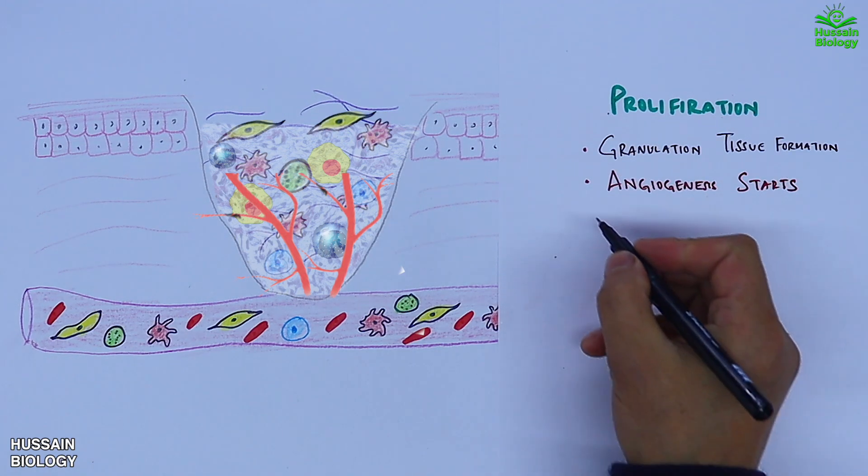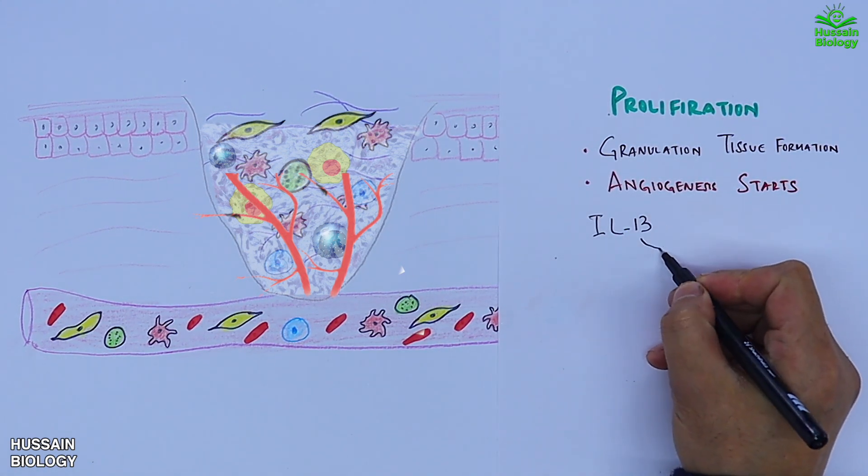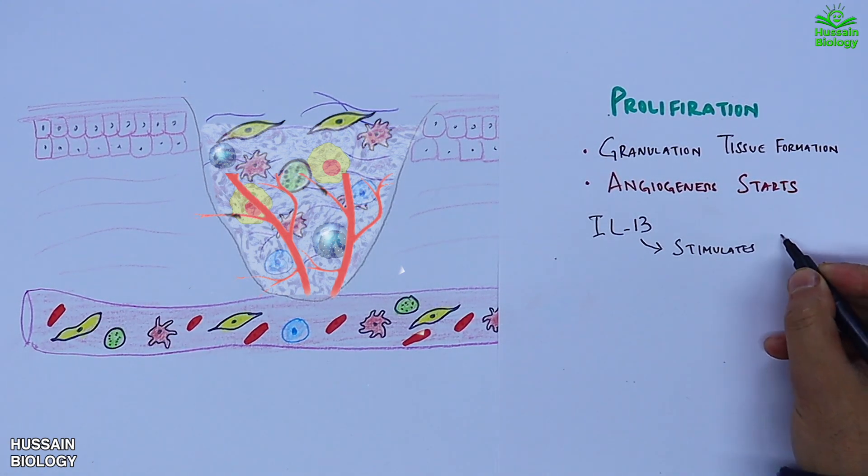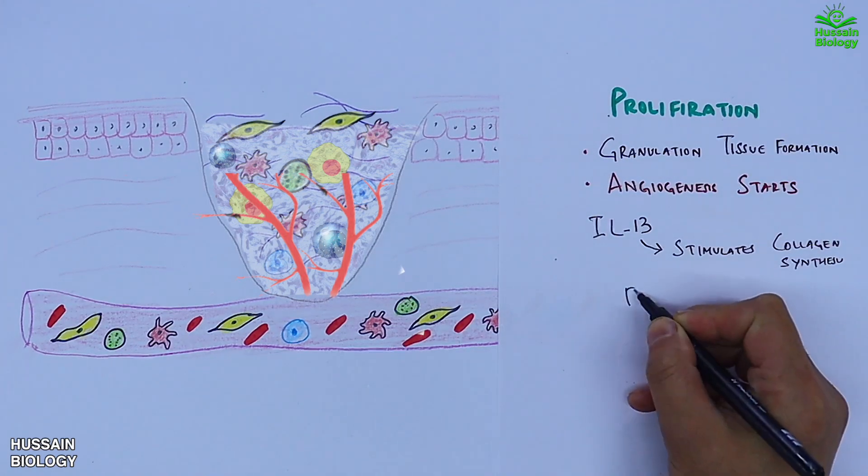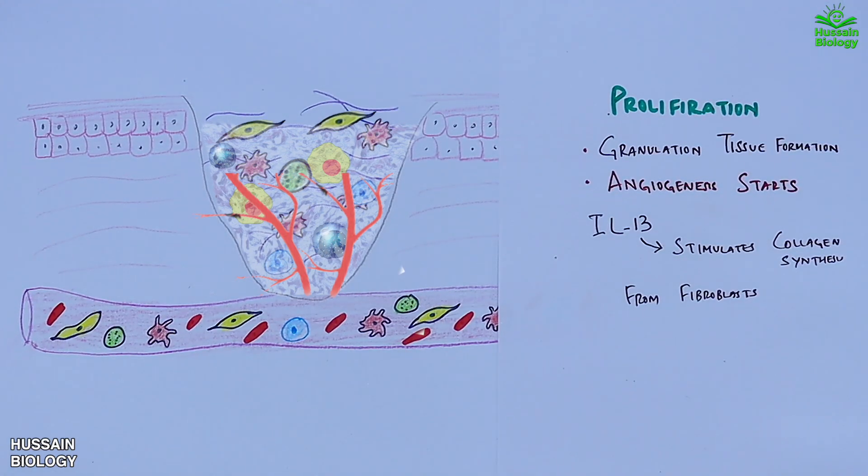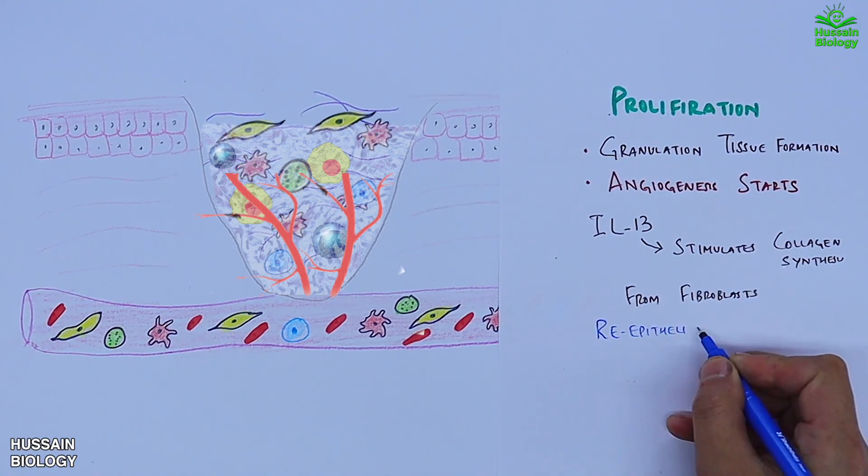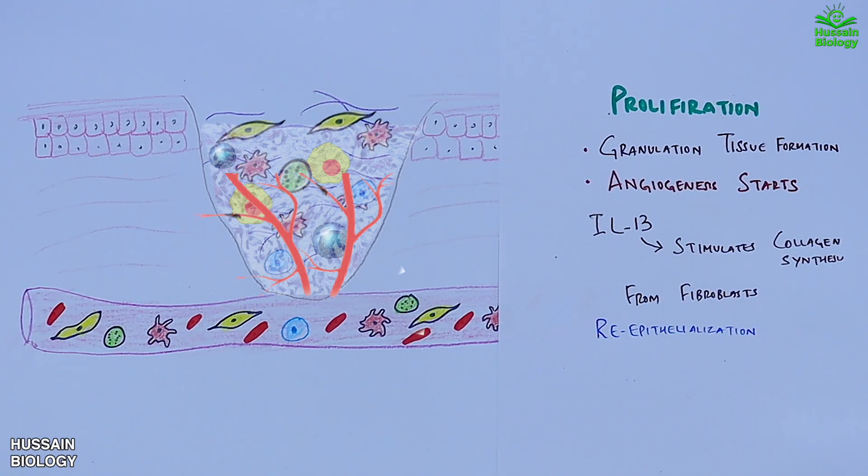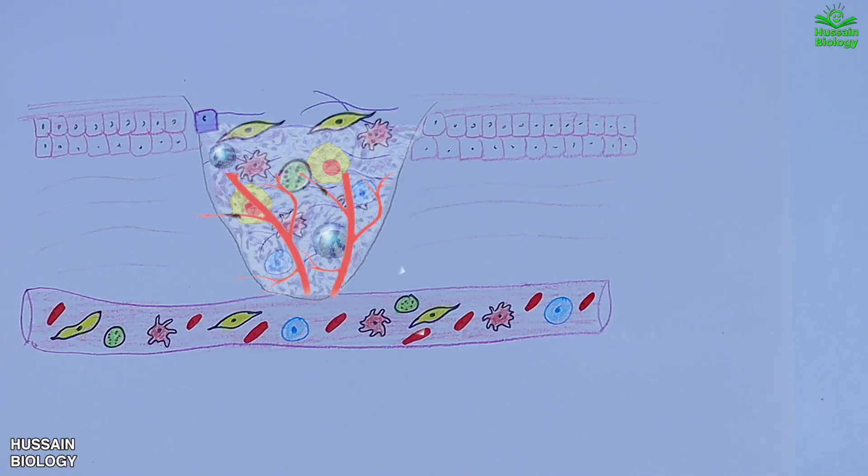And we also see the mast cell secretes the interleukin-13 cytokine, which stimulates collagen synthesis from fibroblasts. Now the wound bed has strengthened. After that, the re-epithelialization process kicks in, where we see the keratinocytes migrate to the wound site and start covering the wound, shown in the diagram, referred as keratinocyte influx.